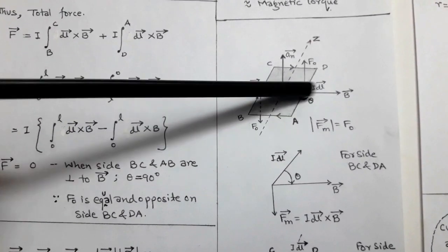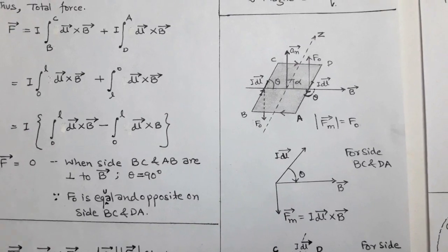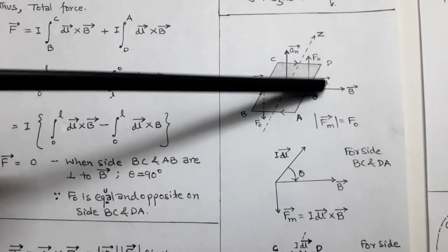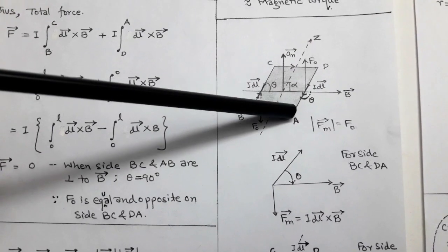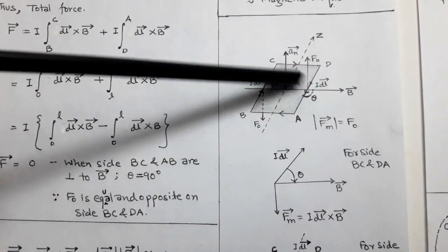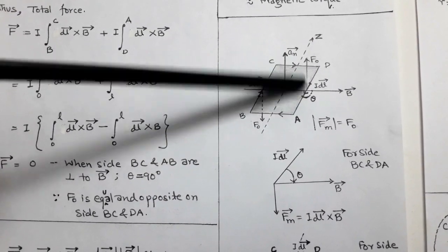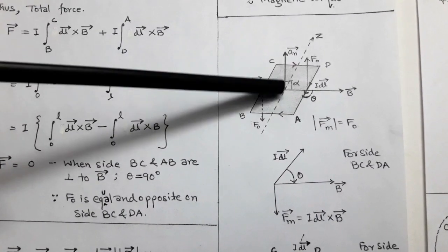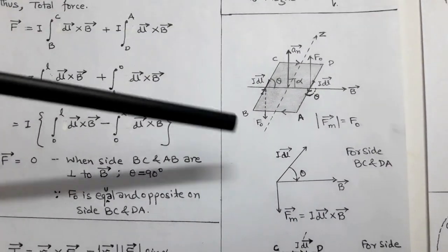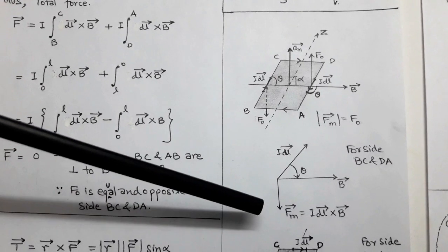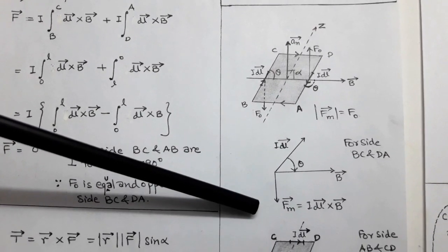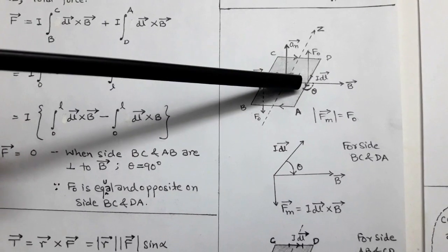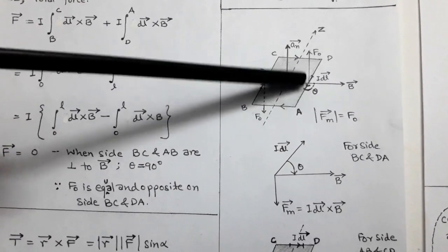As we move the dl vector towards B vector, we get a magnetic force that is upward. Taking a normal unit vector of the current loop, we can define the forces: the magnetic force is downward for the BC path and upward for the DA path.